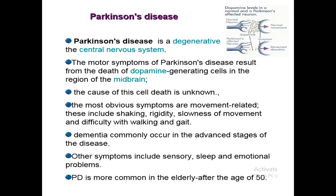Dementia commonly occurs in the advanced stage of Parkinson's disease. After Parkinson's, dementia develops, along with other symptoms including sensory, sleep, and emotional problems - difficulty sleeping and sensory problems. Parkinson's disease is more common in the elderly, after the age of 50. In this diagram, you can see a neuron producing dopamine normally, but after Parkinson's disease the dopamine is not produced, normal movement is disrupted and movement disorder occurs.